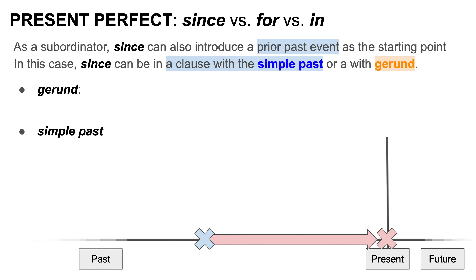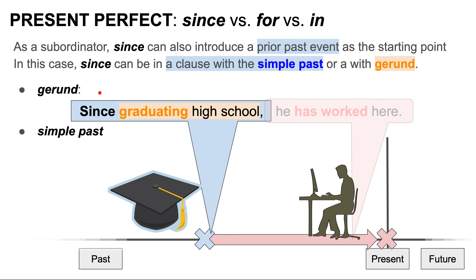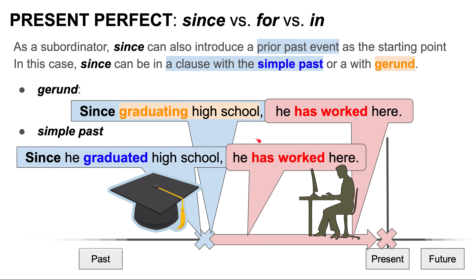Lastly, as a subordinator, since can also introduce a prior past event as a starting point. In this case, since can be in a clause with a simple past or with a gerund. For example, with a gerund: since graduating high school, he has worked here. In a clause with a simple past: since he graduated high school, he has worked here.